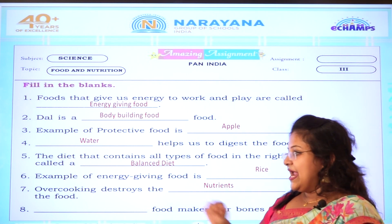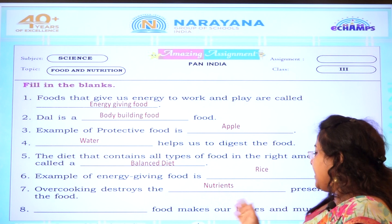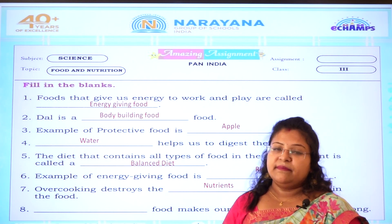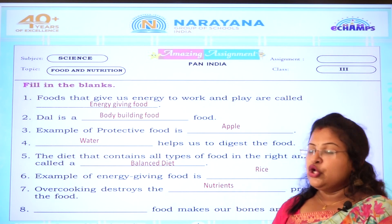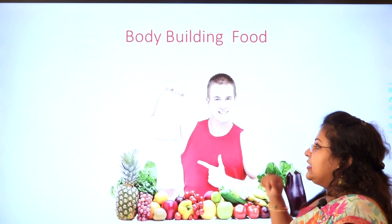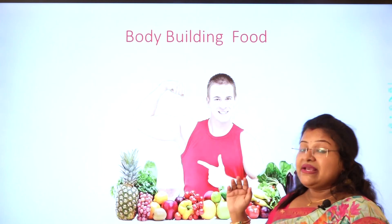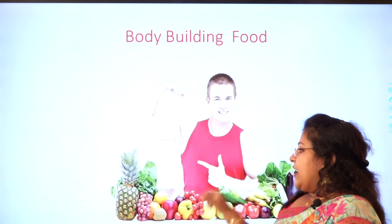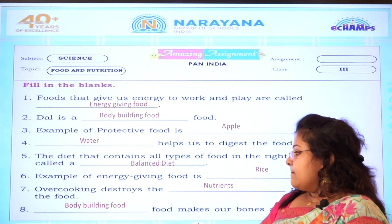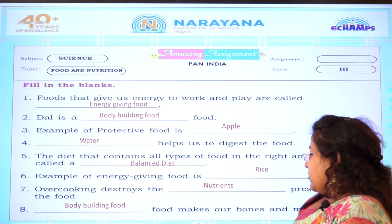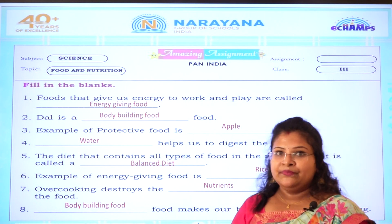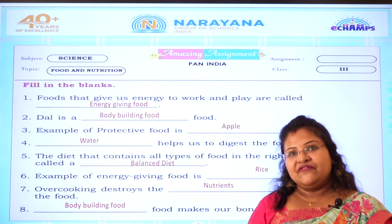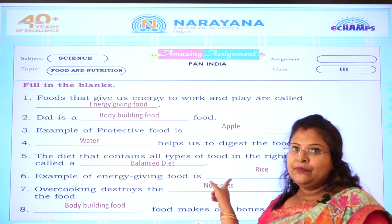Last one, eighth: dash food makes our bones and muscles strong. Which food makes our bones and muscles strong? Body building food is what makes our bones and muscles strong. So the answer will be body building food. We have completed our assignments. I hope everyone has understood. Thank you.